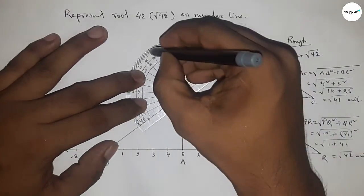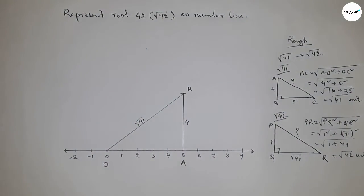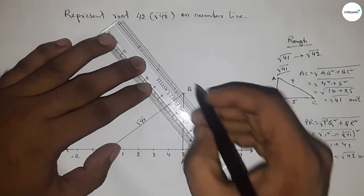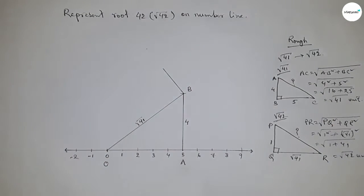So first drawing a 90 degree angle on the point P. Now joining this to get the perpendicular line.